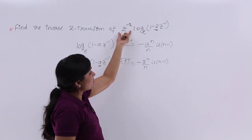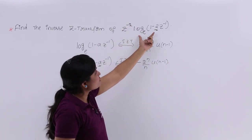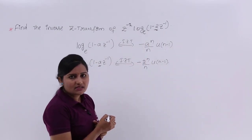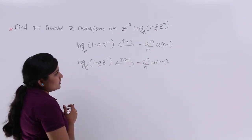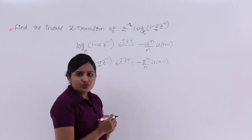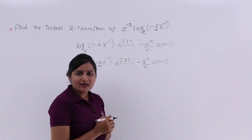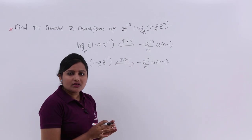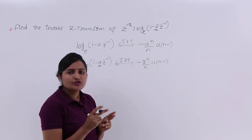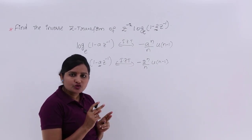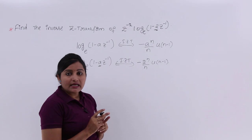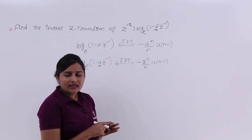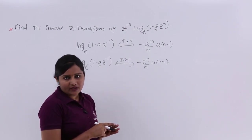But here another term is there: Z^(-2) * log_e(1 - 2Z^(-1)). So further I want to make use of the time shifting property. Always when you are given logarithms in an inverse Z-transform you need to keep two properties in mind: one is differentiation in Z-domain property, and the second is the time shifting property.